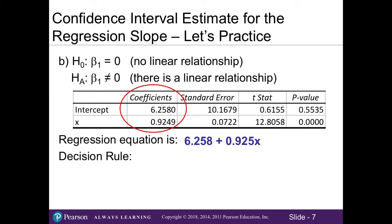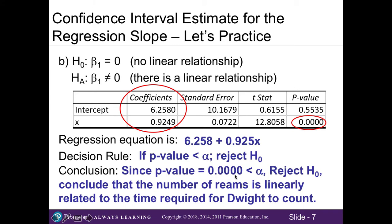Now for our decision rule, since we're using the p-value approach, recall that our p-value rule states that if my p-value is smaller than my alpha value, we reject the null. So looking at our p-value here in the table, we can see it's very small. Our p-value of 0.0000 is smaller than my alpha. So we'll go ahead and reject the null. And so when I reject the null, that means our alternative holds true. And when I interpret what my alternative says, it says that there is a linear relationship. Thus we can conclude that the number of reams is linearly related to the time it takes for Dwight to count them.